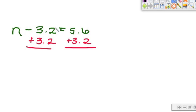These cancel. Remember, a negative and a positive, they just cancel each other out to a zero. So we have n by itself, which was our goal. And now we just come over here and add, and I'm going to get 8.8. And that's my final answer.